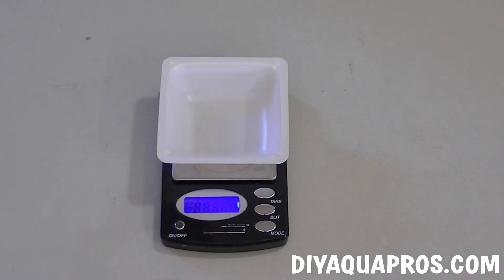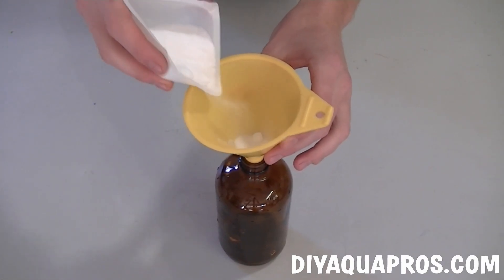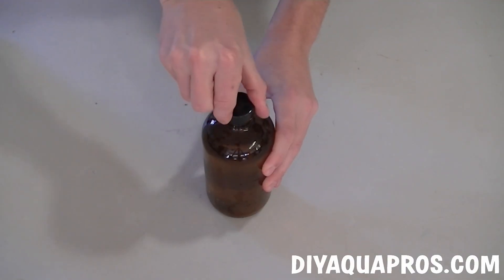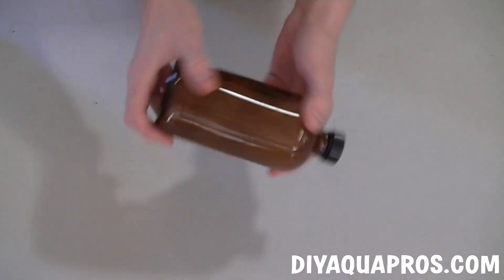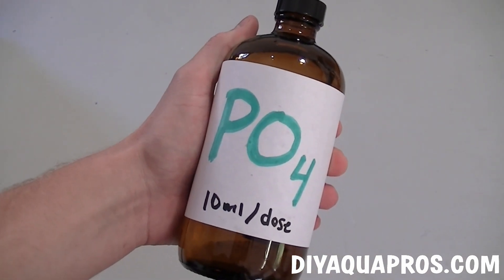Start by turning on your scale and weighing out the appropriate amount of potassium dihydrogen phosphate you calculated previously. Add the fertilizer to your bottle with the help of a funnel. Using your distilled water, fill the bottle up all the way to the top. Screw on the cap and shake well for about 30 seconds to dissolve all the phosphate. Don't forget to add a label with the appropriate dosing information.